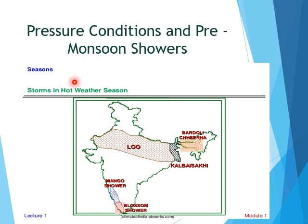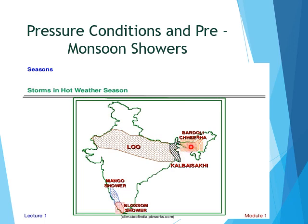Pre-monsoon showers are beneficial for different crops in different areas and have local names. One is Kal Baisakhi — 'Kal' means calamity, and 'Baisakhi' refers to the month of Baisakh. They are also known as Norwesters, as these winds originate over the Chotanagpur Plateau and are carried eastward by Westerlies, causing heavy rainfall in West Bengal and Assam. In Assam, they are locally known as 'Bardoli Chheerha.' This rainfall is beneficial for growing jute and rice in West Bengal and tea in Assam.